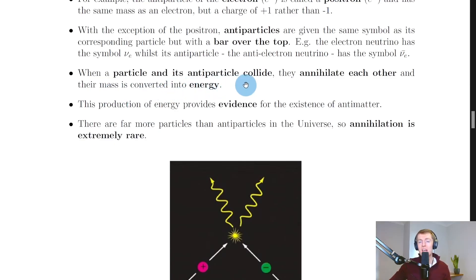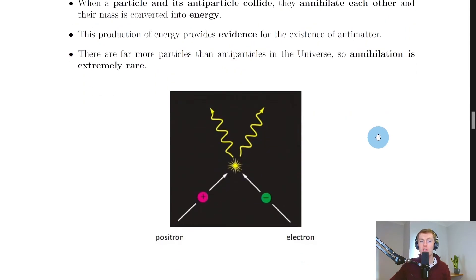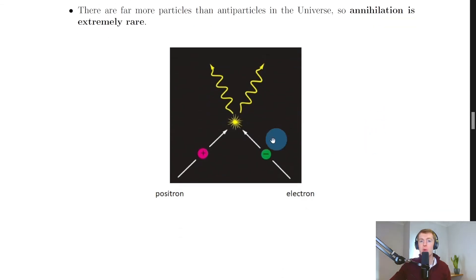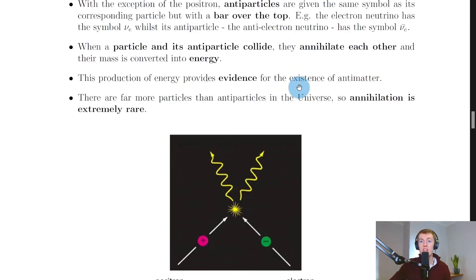It then goes on to say here that when a particle and its antiparticle collide, they annihilate each other and their mass is converted into energy. This production of energy provides evidence for the existence of antimatter. So if you look at the picture here, you can see an example of a positron and an electron colliding, and when they do collide you can see they disappear but they form two gamma rays which then move off in different directions. So this annihilation provides evidence that antimatter actually exists.